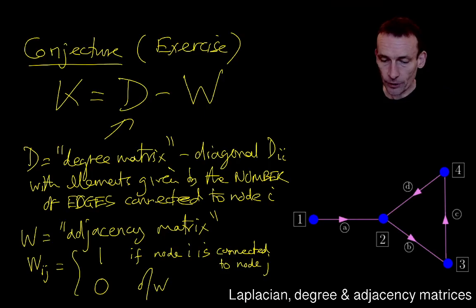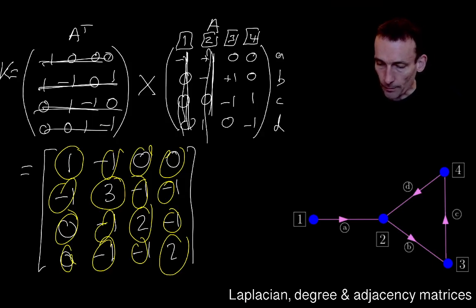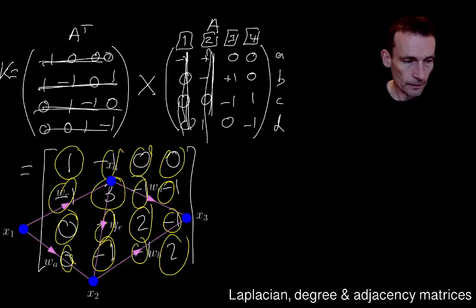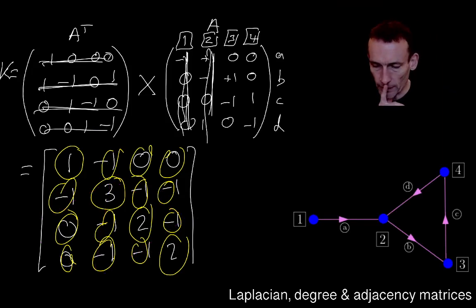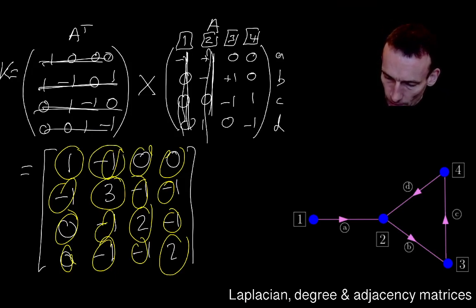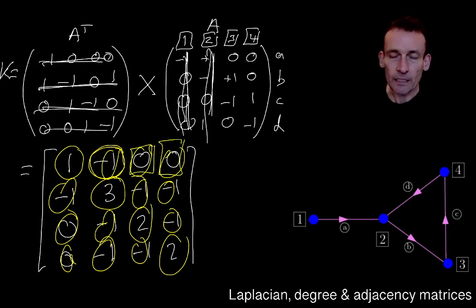And if you just go back to, for example this. And look at, this is the wrong graph. Let's go back to this. Oh no, this was the right graph. So let's just go back to this. This was the right graph, right? Because we have one, three, two, and two. Notice that there's a minus one here, look, because node one and two are connected by an edge. But there's zeros in these locations because the node one is not connected to nodes three and four. So this is indeed D minus W.